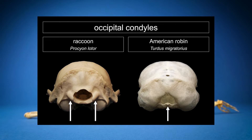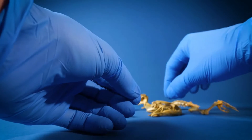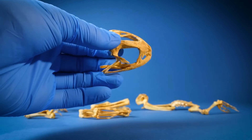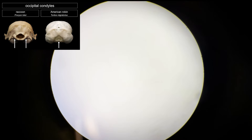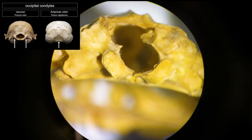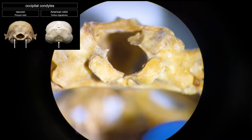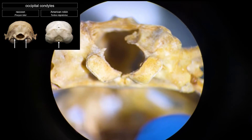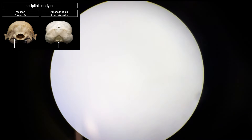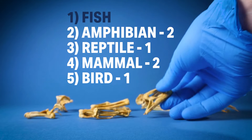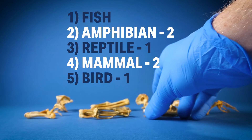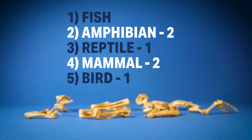Take a look at this image — this shows what I'm talking about. On the left is a raccoon; it has two occipital condyles. On the right is a bird; it only has one. Now we're going to take a look at this skull under the microscope. It's pretty clear that we have one on the left and one on the right — that's two occipital condyles. So we can pretty safely say this is not a reptile or a bird; this is a mammal or an amphibian.